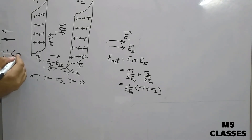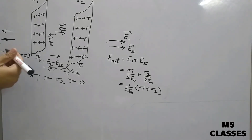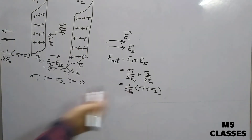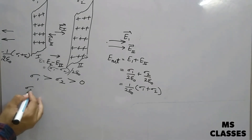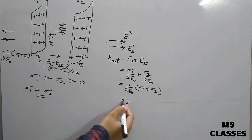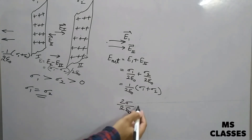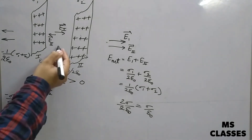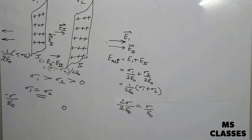For the rightmost point, both electric fields point along the negative x-axis, so the net value is the same magnitude but with a negative sign, indicating the field is opposite in direction. Now if sigma 1 equals sigma 2 — both equal sigma — then outside the sheets the field becomes 2 sigma / 2 epsilon naught = sigma / epsilon naught, and between the sheets the field becomes zero, since sigma 1 minus sigma 2 equals zero.